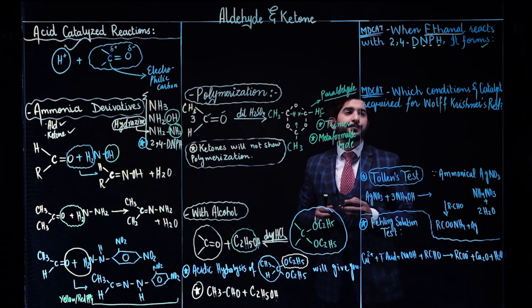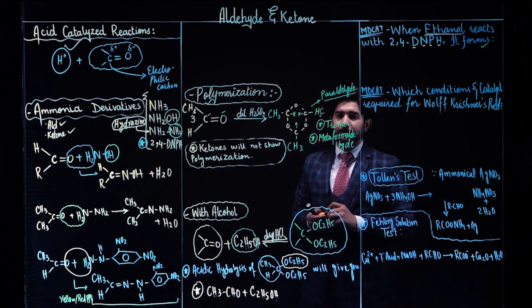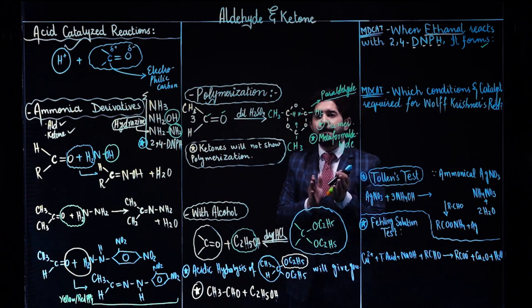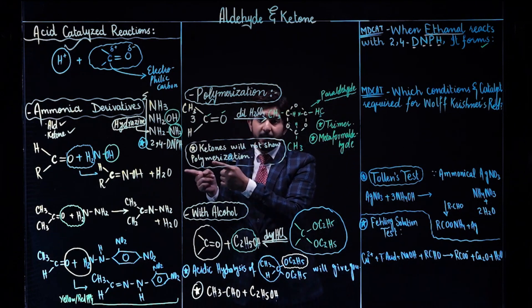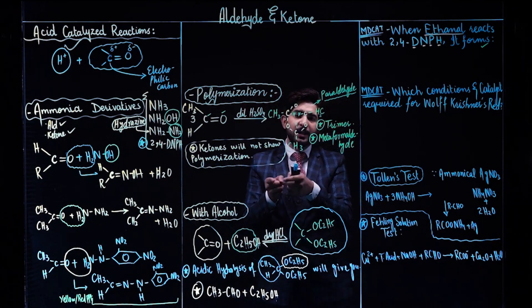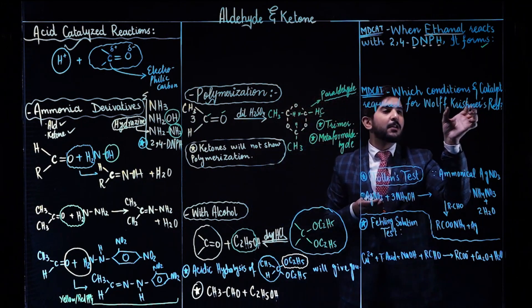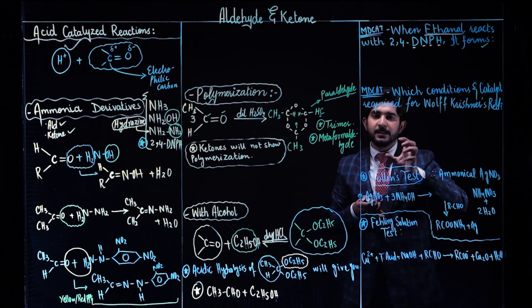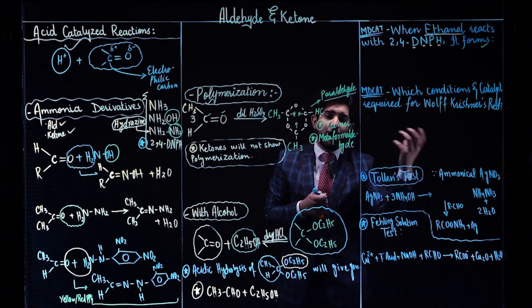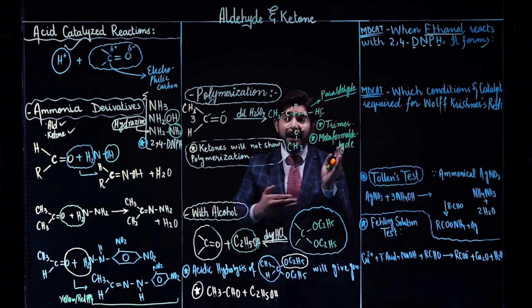Now moving to the next concept: which conditions and catalysts are required for Wolf-Kishner reduction? Remember the sequence: alkanes oxidation gives alcohol, alcohol oxidation gives aldehydes, aldehyde oxidation gives carboxylic acids, and the reverse process is reduction. In Wolf-Kishner reduction, we use hydrazine N₂H₄ in basic medium with heat around 150 to 250 degrees Celsius. The carbonyl compounds — aldehydes or ketones — are reduced, and we can get alkanes directly.